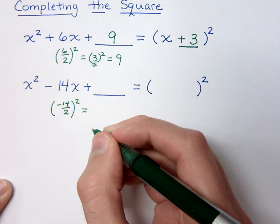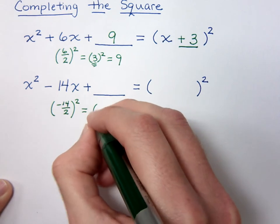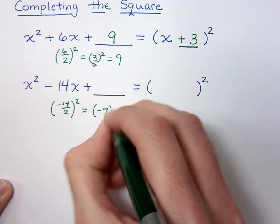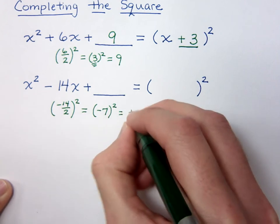Divide by 2 and square it. See? Cool. Easy. Just divide by 2 and square it. So when you divide this by 2, you get negative 7, and then you square that guy, so negative 7 squared is a positive 49.